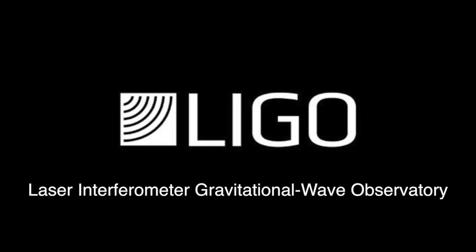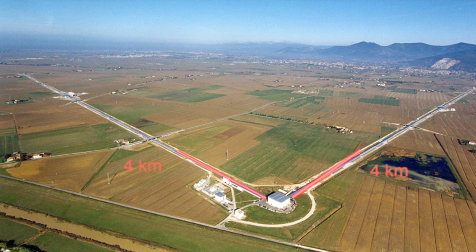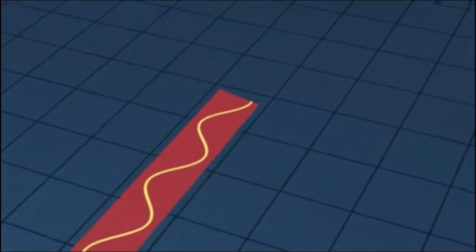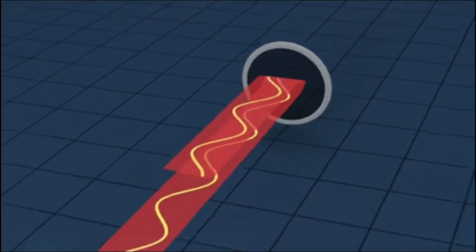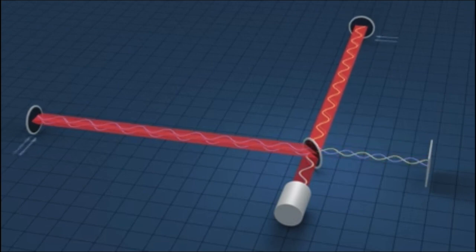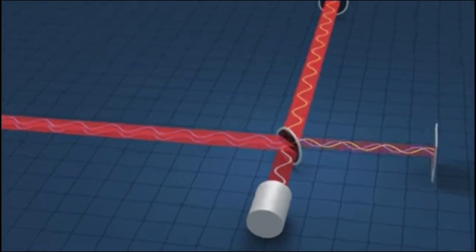And exactly 100 years later, LIGO detected the gravitational wave. LIGO is an L-shaped detector that has 4 kilometer arms. In this detector, laser is sent and split at the beam splitter through the evacuated tunnel. When the light recombines, interference pattern disappears as they offset. However, when the gravitational wave passes through LIGO, it stretches and squeezes the two arms, creating a different phase of the two lasers.